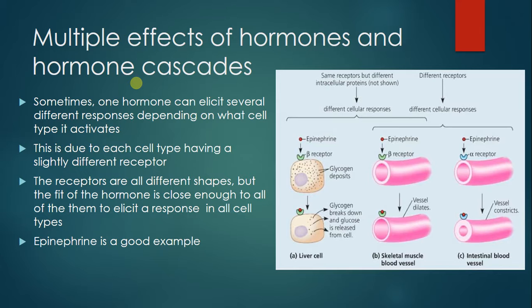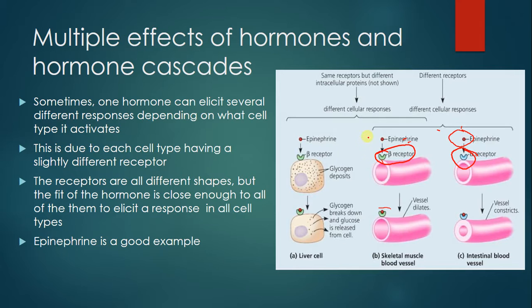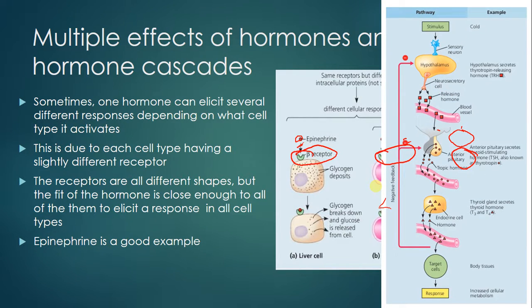Some hormones can have multiple effects depending on what cell type they activate, due to each cell type having slightly different receptors that are close enough to respond to the same hormone. Epinephrine is an example: in skeletal muscles, it binds to beta adrenergic receptors causing vasodilation; in intestinal blood vessels, it binds to alpha adrenergic receptors causing constriction; and in glycogen-depositing liver cells, it binds to beta adrenergic receptors causing glycogen breakdown—same hormone, different responses in different tissues.